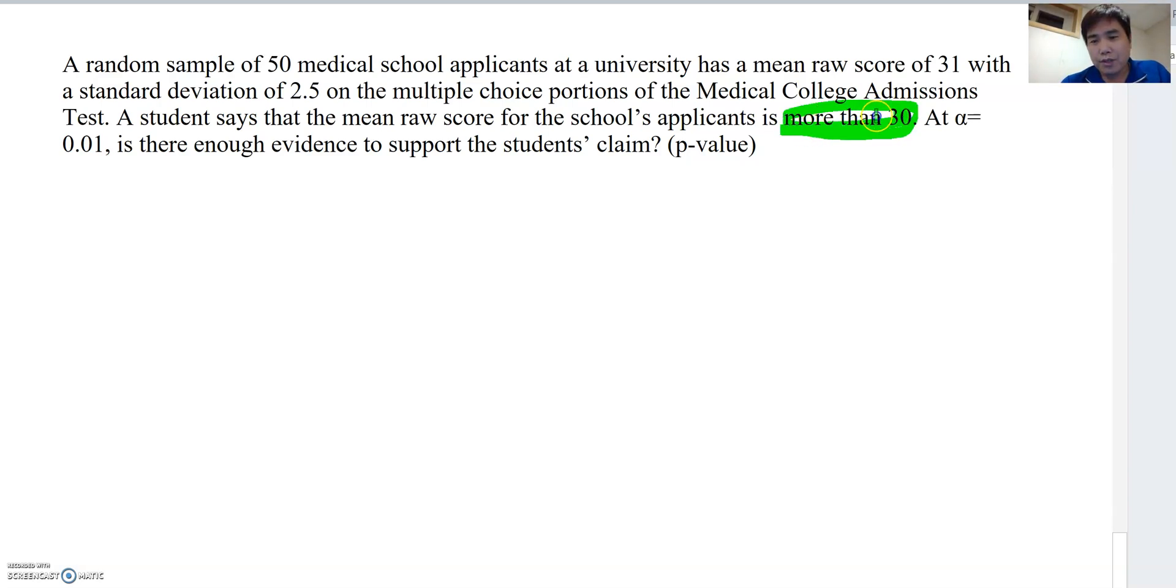More than means right side direction, so HA becomes mu is more than 30, then H0 becomes mu is less than or equal to 30. This is the claim here. As you see, HA goes to the right side, so it becomes a right-tail test.